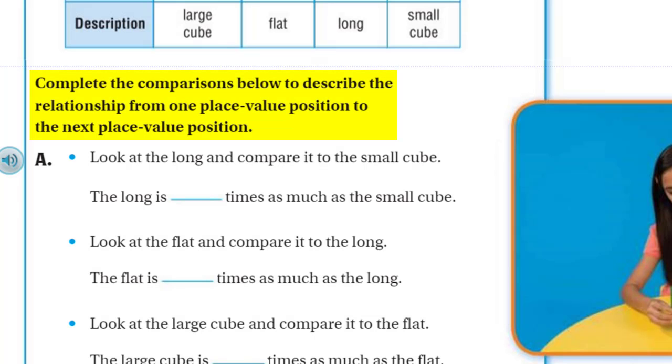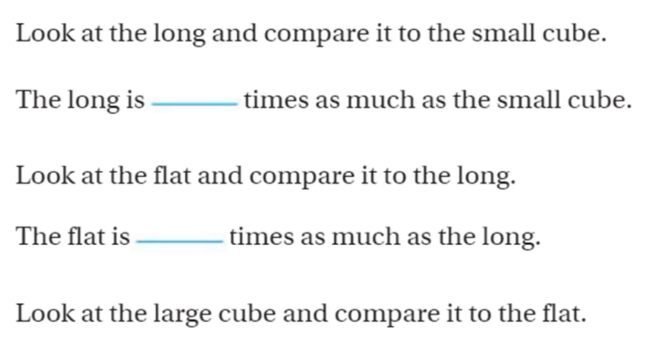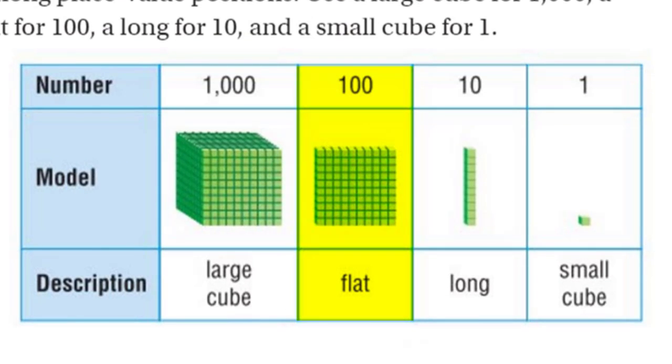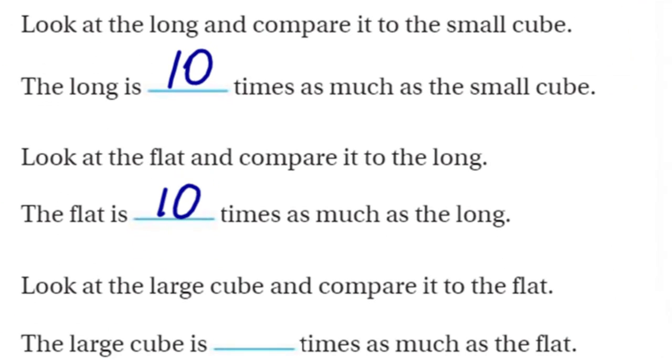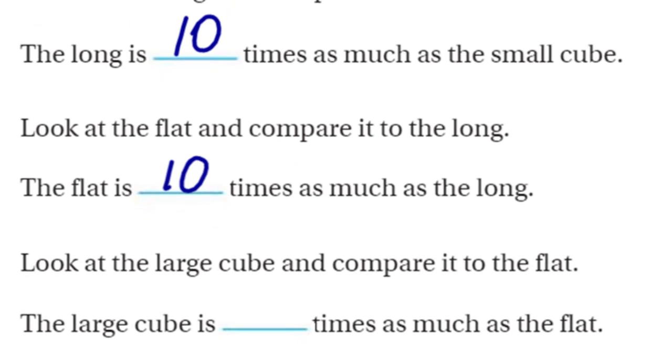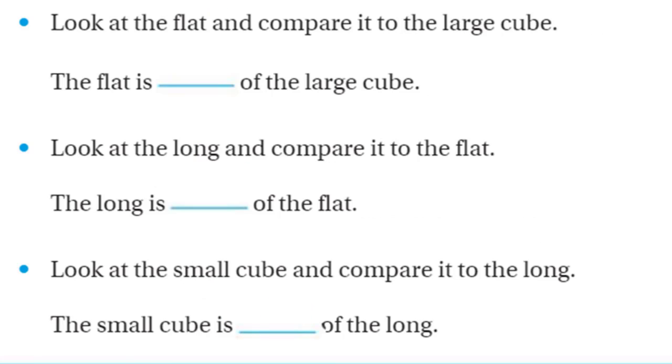It says complete the comparisons below to describe the relationship from one place value position to the next place value position. Look at the long and compare it to the small cube. The long is 10 times as much as the small cube. Now look at the flat and compare it to the long. The flat is 10 times as much as the long because we're moving to the left and the value increases by 10 times. Look at the large cube and compare it to the flat. The large cube is 10 times as much as the flat.